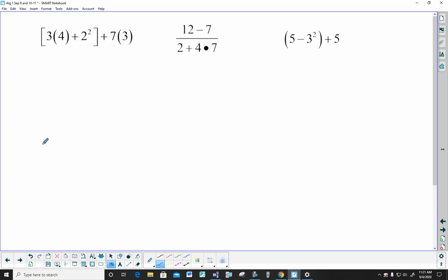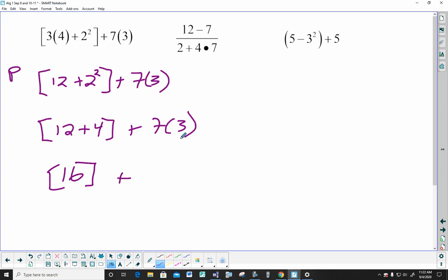So PEMDAS, working down it. I have parentheses inside these brackets. These brackets are just fancy parentheses. I still start inside them. 3 times 4 is 12 plus 2 squared plus 7 in parentheses 3. Still working inside this one. Inside there, I have to take care of this exponent before I can do the addition. So that's 12 plus 4 plus 7 in parentheses 3. Now I can finish in there. 16 plus 7 times 3, which is 21. These brackets are no longer needed because there's nothing else outside it. So I just have 16 plus 21, which is 37.